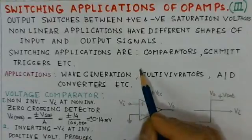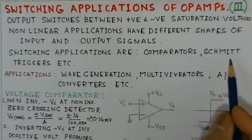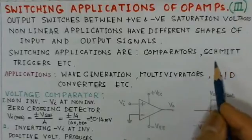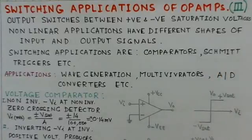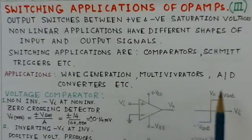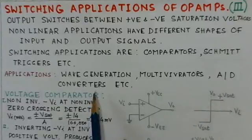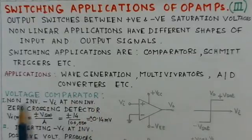The switching applications we will talk about include comparators, Schmitt triggers, and other similar circuits. Typical applications for these circuits are in wave generation, in multivibrators, and in A-to-D converters. We will now describe these circuits one by one, starting with the voltage comparator.